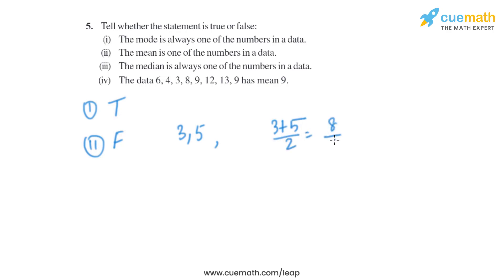Which is the same as 8 by 2, which is the same as 4. So we have got the mean which is 4, which is not present in the data. So it is not necessary that mean is one of the numbers in a data, so that is false.